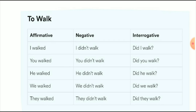For the interrogative sentence, 'did' comes at the start. For example: 'Did I walk?' — 'walk' is the first form of the verb, according to the interrogative formula. Full conjugation: you walked / you did not walk / did you walk? He walked / he did not walk / did he walk? We walked / we did not walk / did we walk? They walked / they did not walk / did they walk?